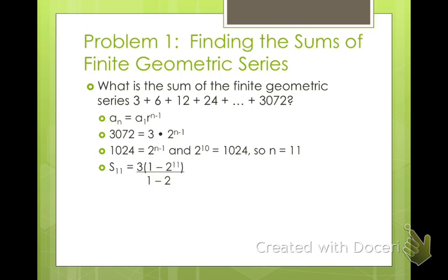Then we go ahead and plug that into our summation formula. S sub 11 equals 3, our first term, times 1 minus 2 to the 11th, divided by 1 minus 2. You go ahead and simplify that and you should get 6,141. So that's the sum of all the terms.